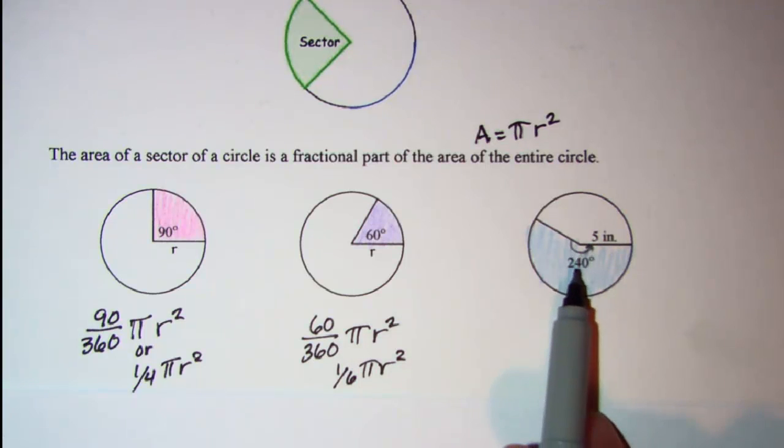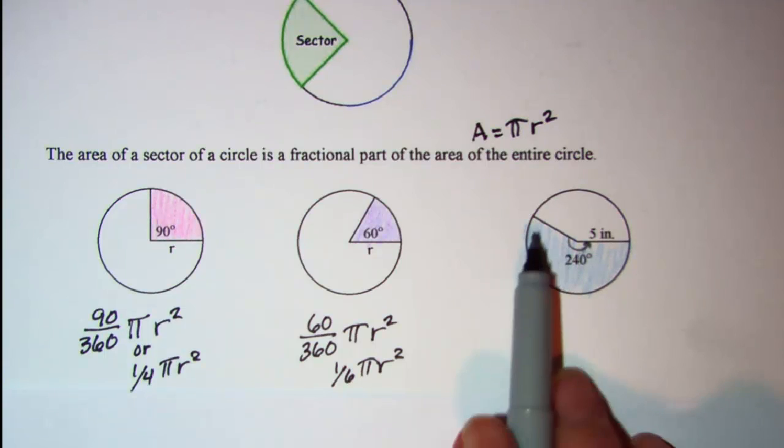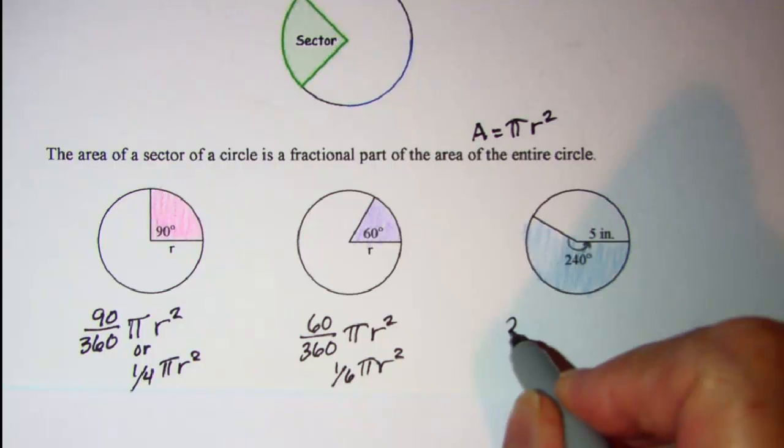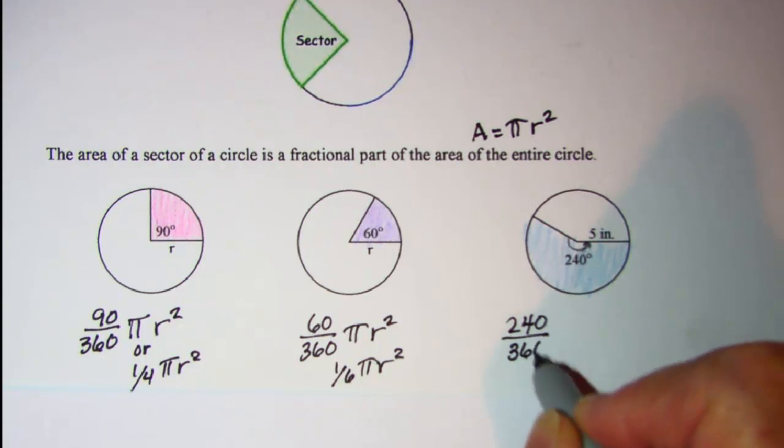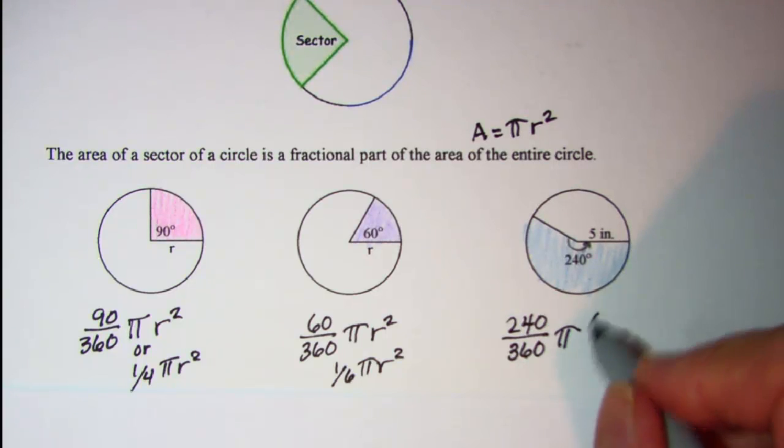On this one we have a central angle of 240 degrees since I'm looking for the shaded region right here. So my fraction is 240 over 360 pi and then radius is 5. So 5 is squared.